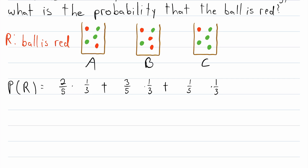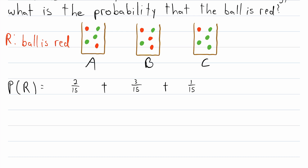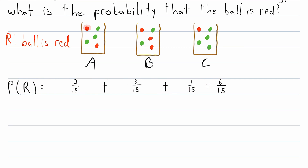Now we just do a little fraction multiplication. 2/5 times 1/3 is 2/15. 3/5 times 1/3 is 3/15. And 1/5 times 1/3 is 1/15. Adding these three numbers up, we get that the probability of selecting a red ball is 6/15. We could have also noticed from the start that there are fifteen equally likely possibilities and six involve a red ball, but it's not always going to be that easy.